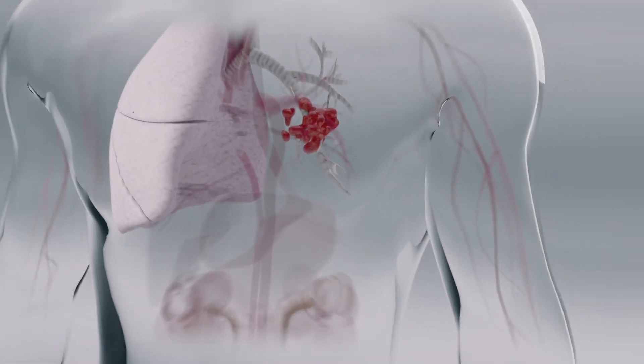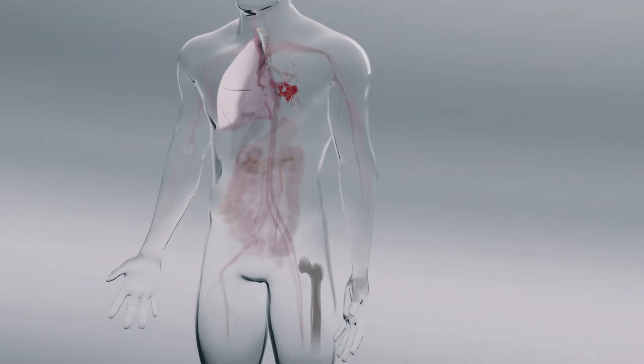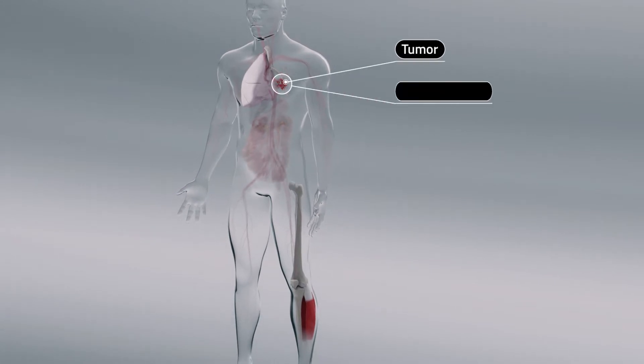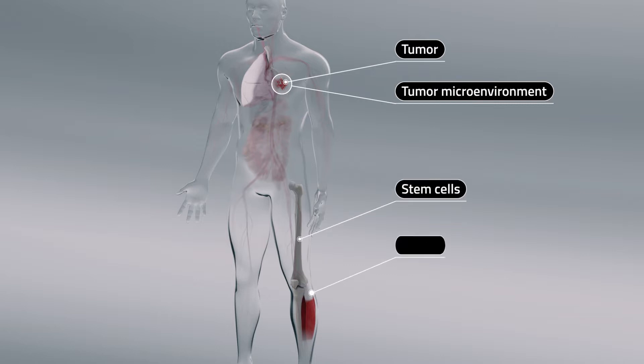In patients with cancer, cfDNA can originate from several sources including cancer cells, cells from the tumor microenvironment, and non-cancer cells such as stem, muscle, and epithelial cells.